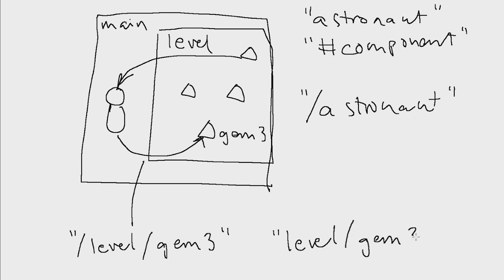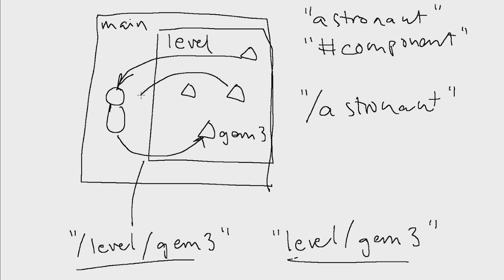An alternative is a relative path from the astronaut: `level/gem3` — assuming that at the same level as astronaut there is a collection called `level`. Relative addressing can only go deeper into the hierarchy, not back up. You can't do a relative address going outward — that's not possible. Level collection is included in main, so main knows about level but level doesn't know about main.